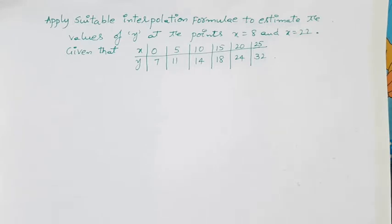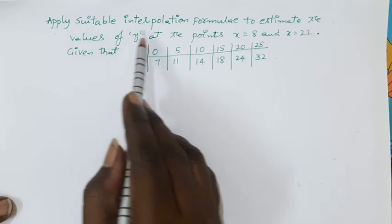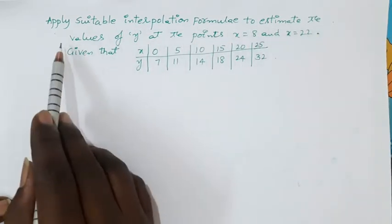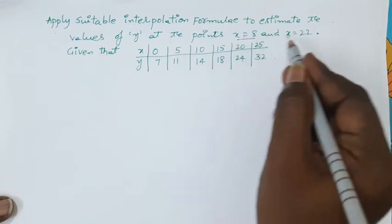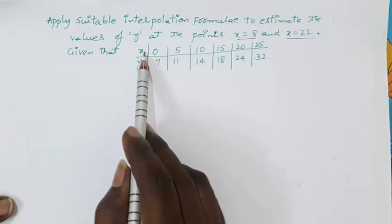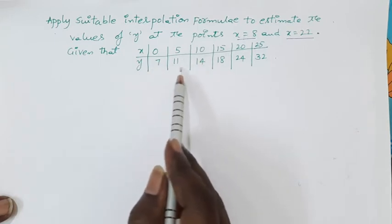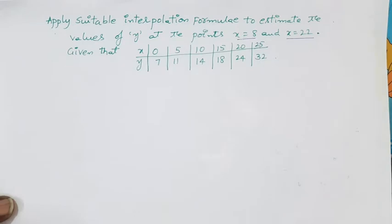Hi everyone, welcome back to our channel. In this video I would like to give another example on interpolation formula. See the statement of the given problem: apply suitable interpolation formula to estimate the values of y at the points x equal to 8 and x equal to 22. This is the given data — the first row has x values and the second row has corresponding y values.